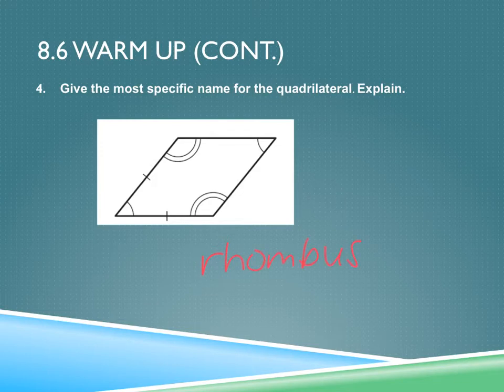By the angles opposite them being congruent, I know that the sides opposite each other must also be congruent. And if consecutive sides are congruent, now it's a rhombus. On a kite, you can't have two pairs of opposite congruent angles — that pair is what distinguishes it.